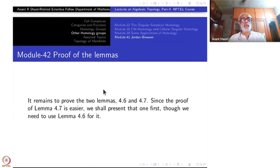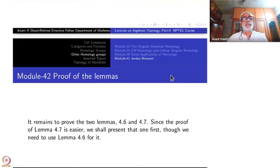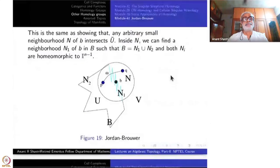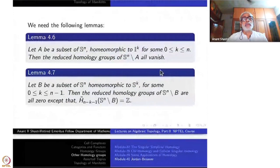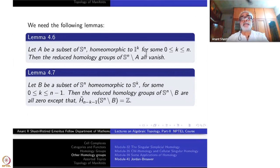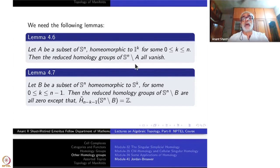We are in the middle of proving the Jordan-Brauer theorem and Brauer's invariance of domain theorem. We proved these two statements modulo two important lemmas. The first lemma says that a subset of S^n homeomorphic to I^K, where K is between 0 and N, has all reduced homology groups of the complement vanishing.